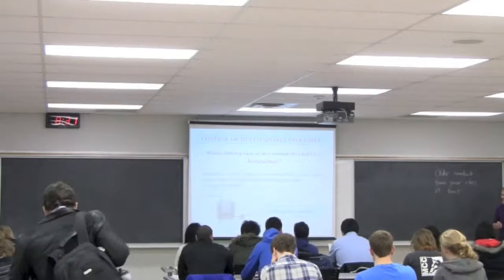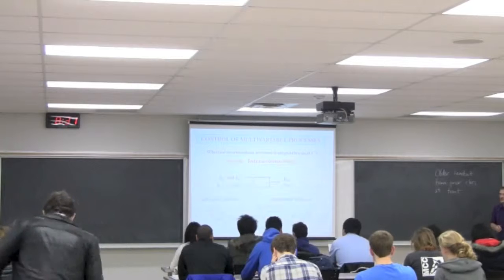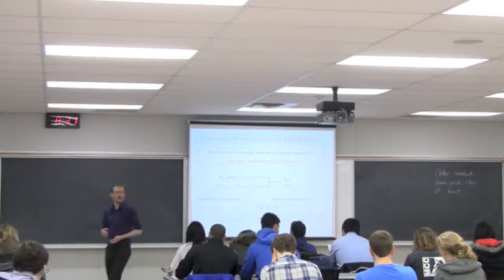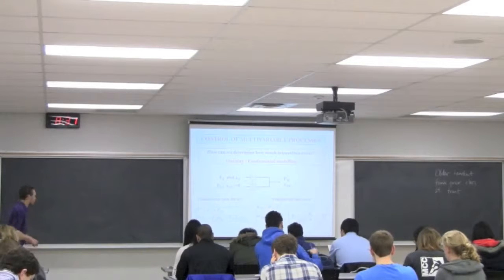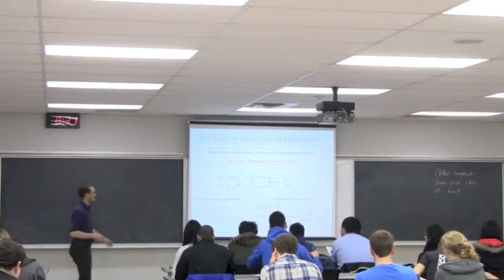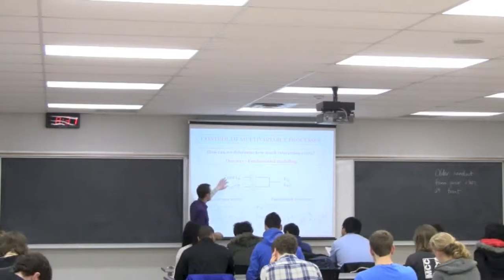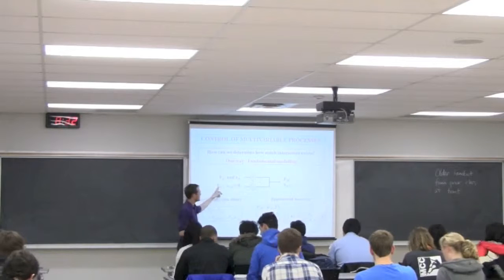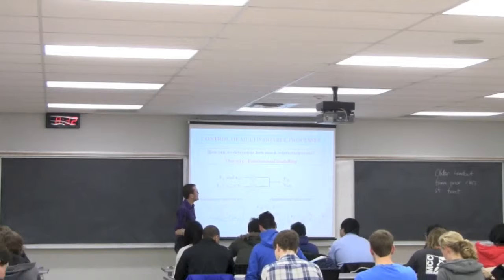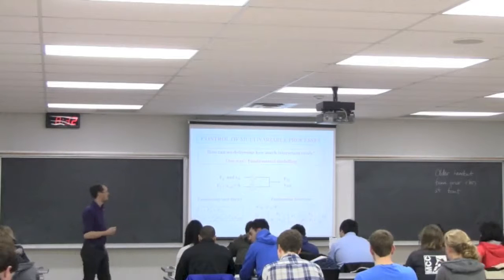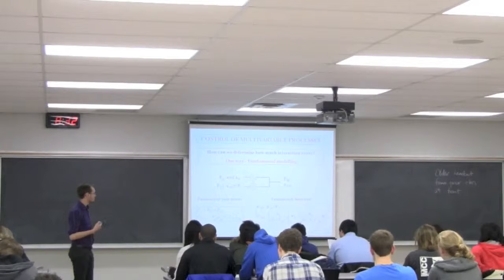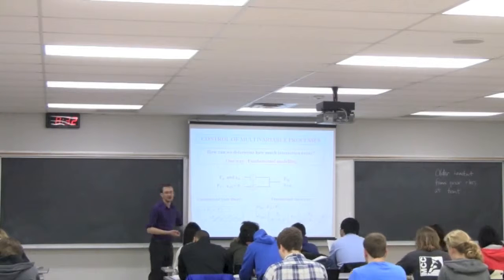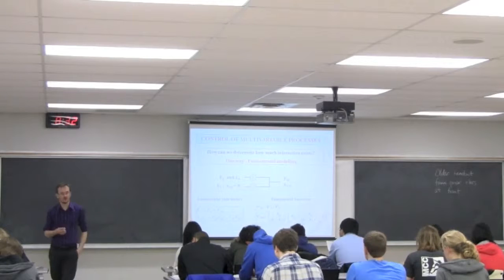Let's start on a 2x2 system — two inputs, two outputs — which I introduced in Monday's class using a simple blending case study. We take a feed stream FA with concentration XA, and a solvent stream FS with no A. When we blend those together, we get a blend flow rate FM and a blend concentration XAM. From the overall mass balance and component mass balance, we can derive the equations we looked at last time.